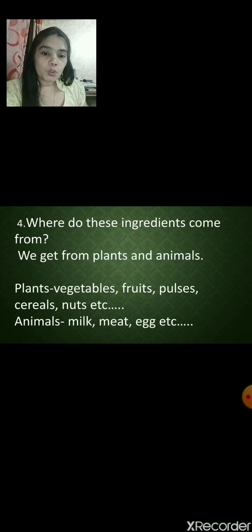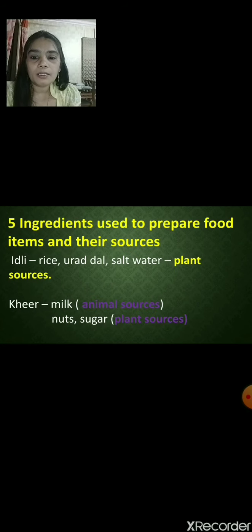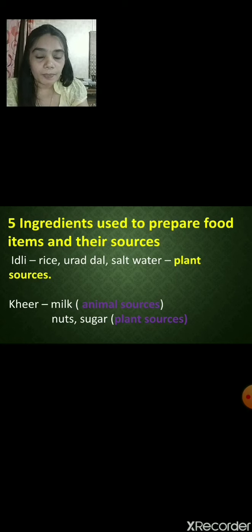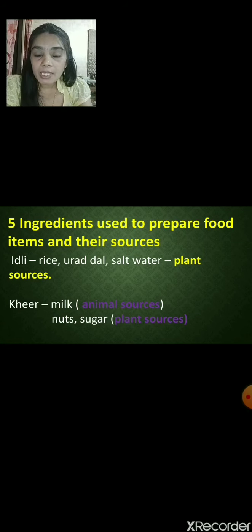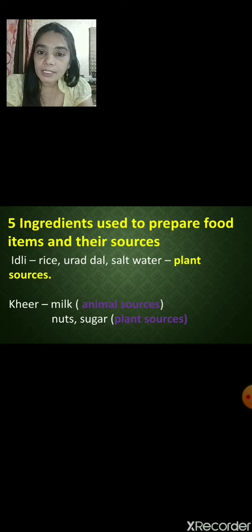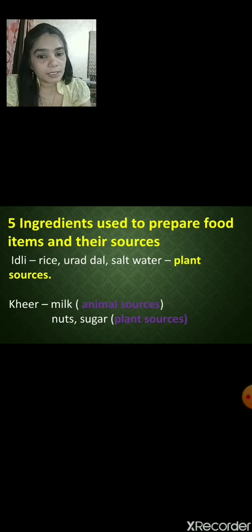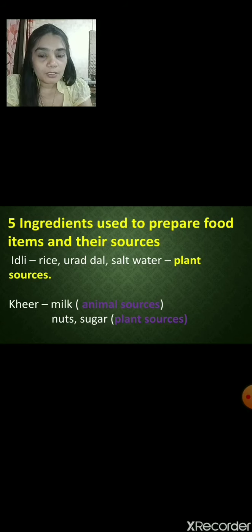To cook idli, what ingredients are required? We require rice, urad dal, salt and water. Rice comes from plants and urad dal also comes from plants. So the sources we get from plants are rice and urad dal for making idli.